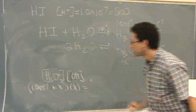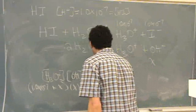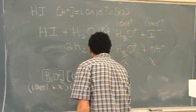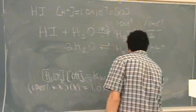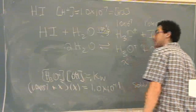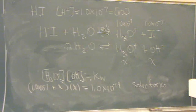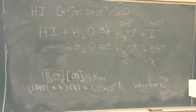What's this going to be equal to? Yeah, this is Kw, which is 1.0 times 10 to the minus 14. So you solve for x. What do you get for x? You didn't solve it. Are you sure? You called it. Okay.